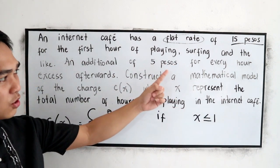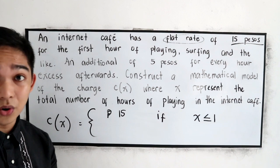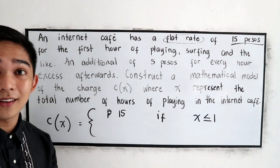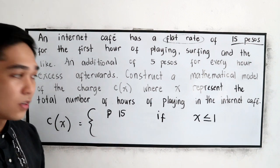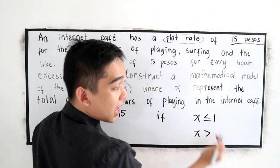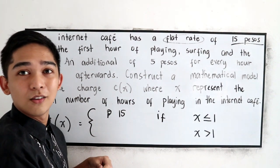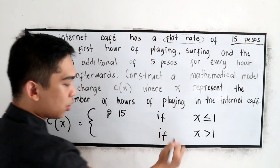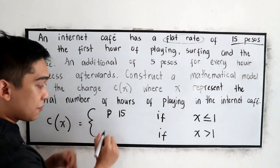Kapag daw sumover siya natin isang oras, dalawang oras, tatlong oras, ano yung magiging mathematical model natin? So kapag if x is greater than one, isang oras o mas malaki daw sa one, ano ngayon yung model natin?